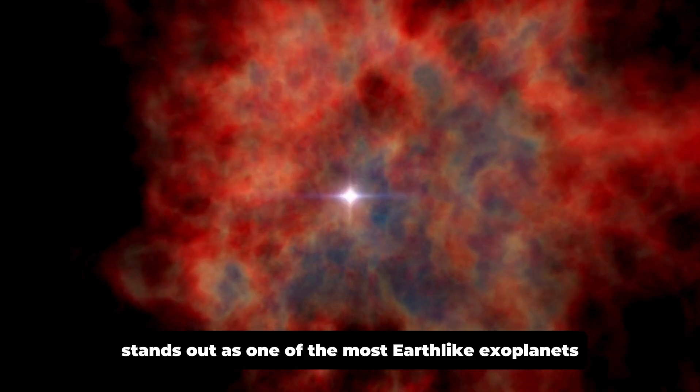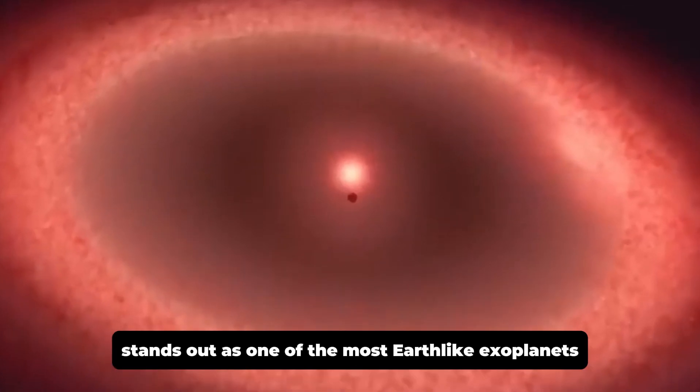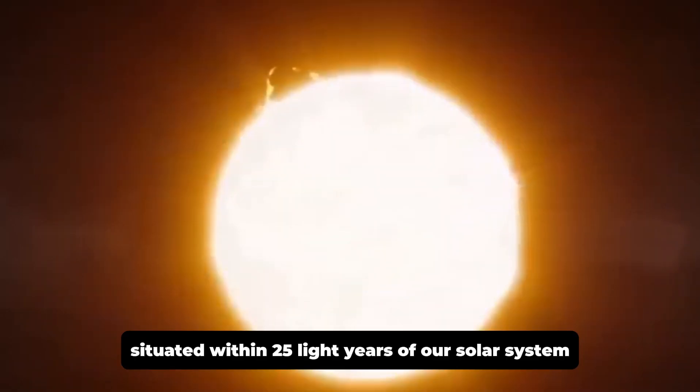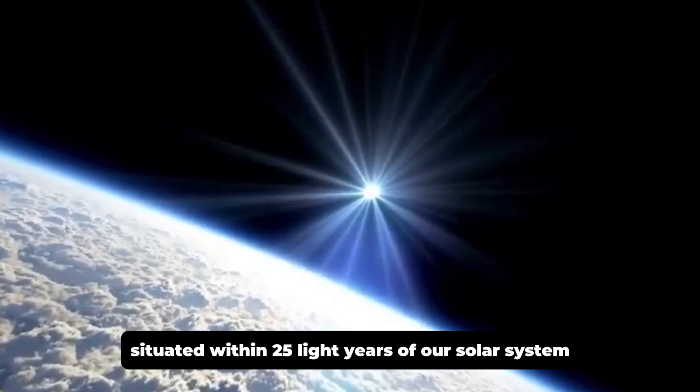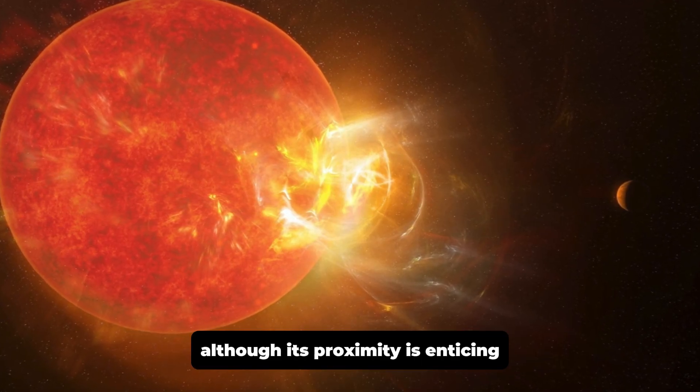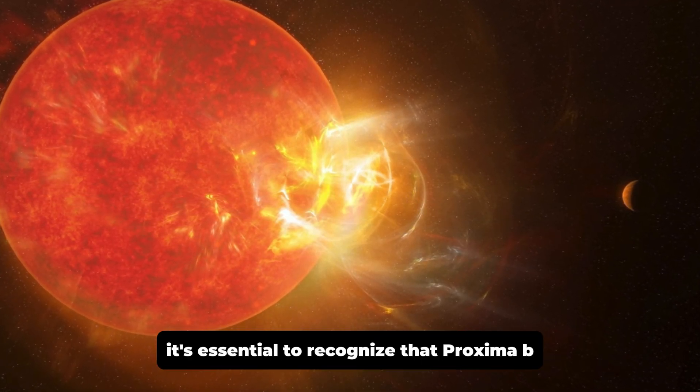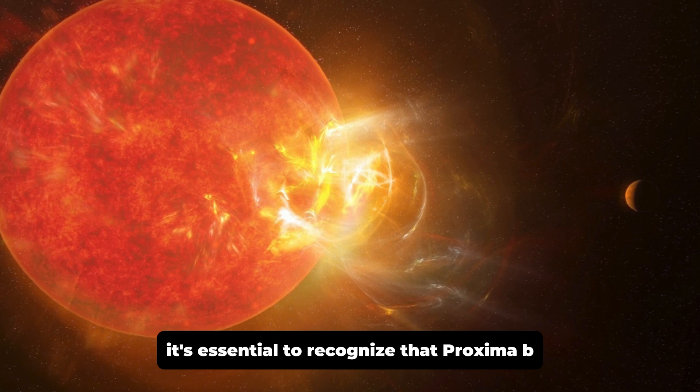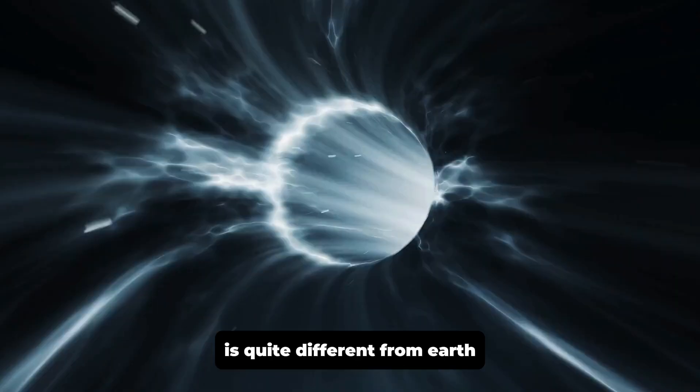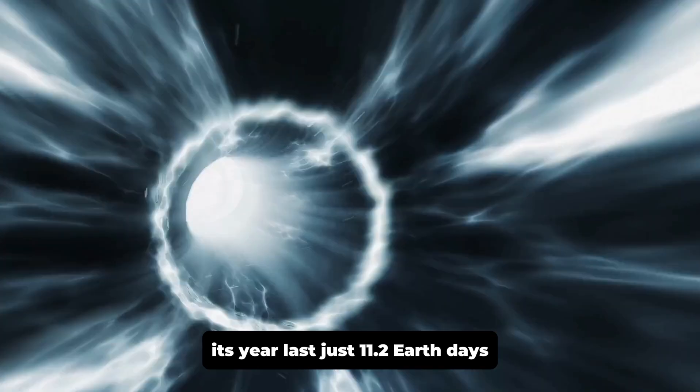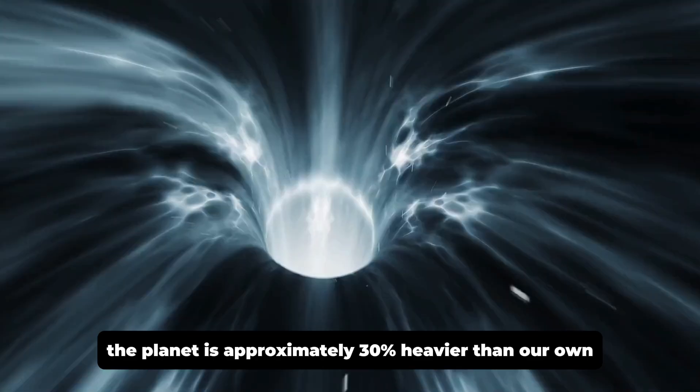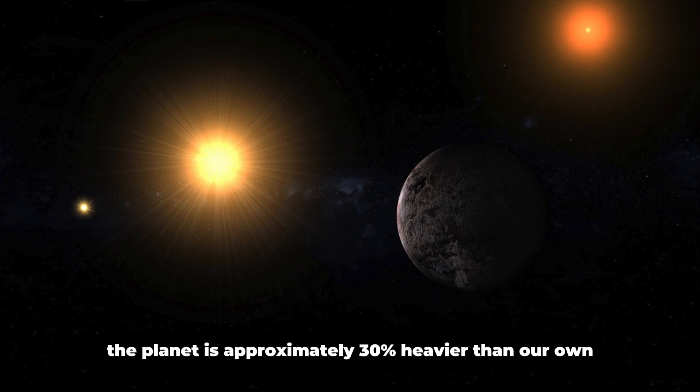Proxima B stands out as one of the most Earth-like exoplanets discovered to date, situated within 25 light-years of our solar system. Although its proximity is enticing, it's essential to recognize that Proxima B is quite different from Earth. Its year lasts just 11.2 Earth days, and the planet is approximately 30% heavier than our own.